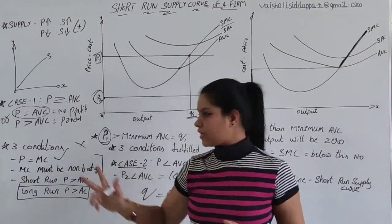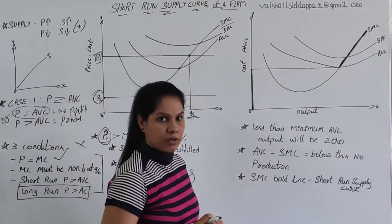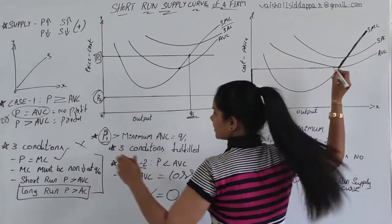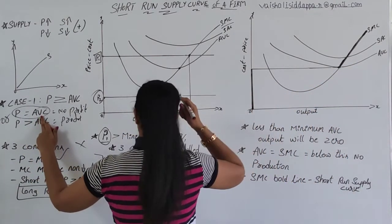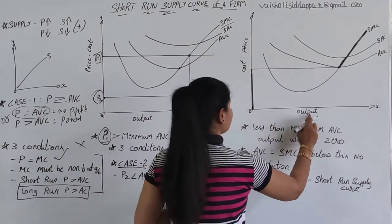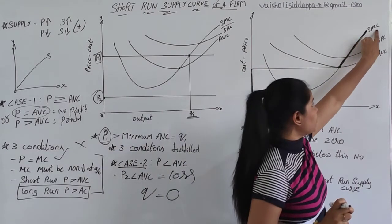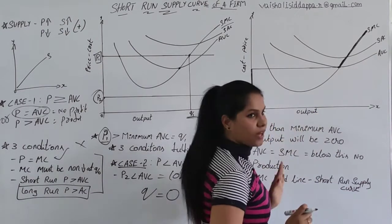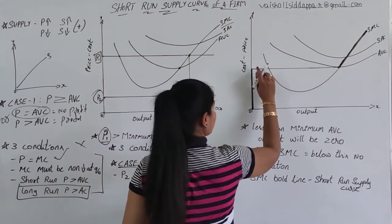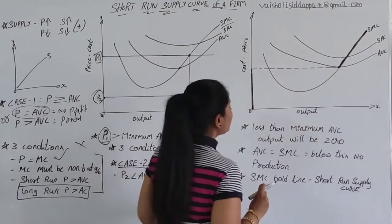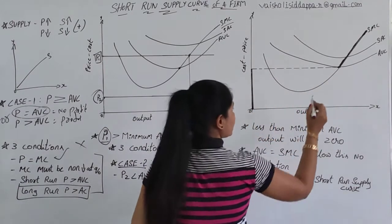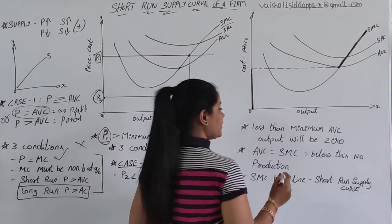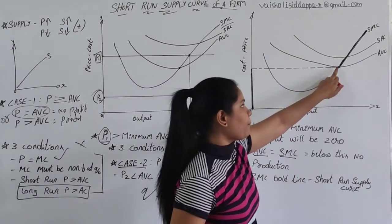We are done with one diagram covering the two cases. Now there is one more diagram with the same curves. In the x-axis you have output; in the y-axis, cost and price. SMC is short-run marginal cost, SAC is short-run average cost, and AVC is average variable cost. Looking at a dotted line, you can see SMC from below cuts the AVC curve at a certain point — at that point, AVC equals SMC.